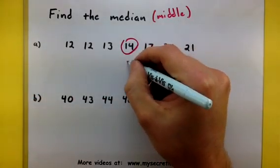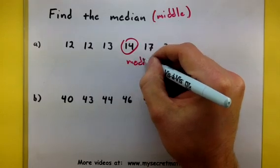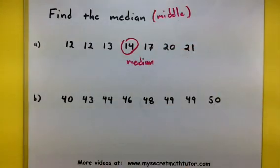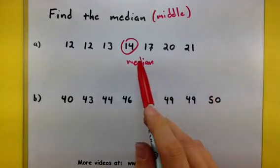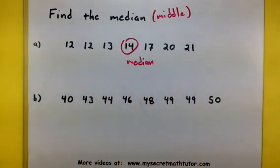So the fourteen is our median. Now you can see that if you have an odd number of values, there will be only one number for the median.